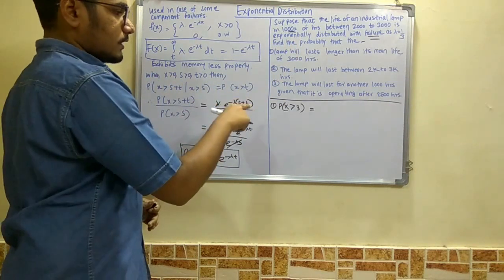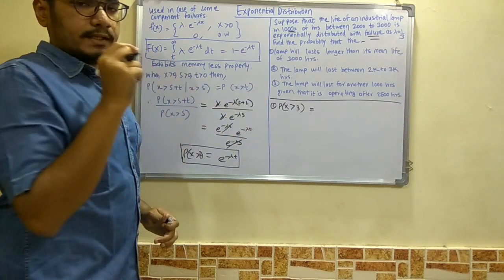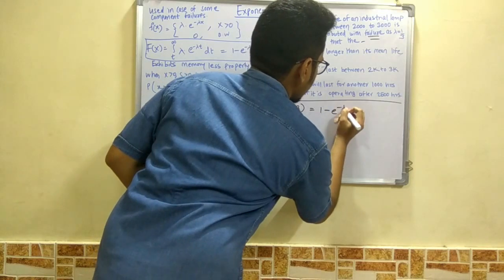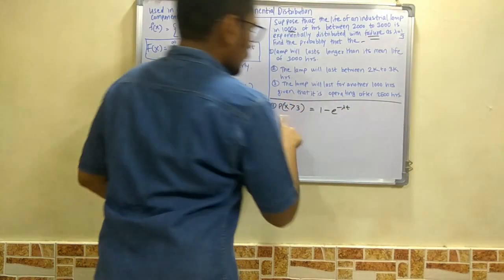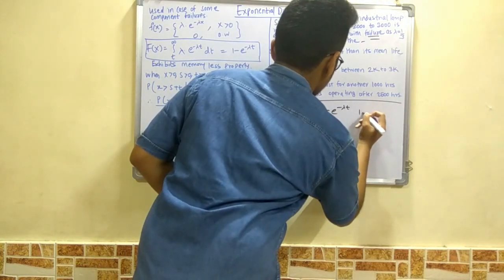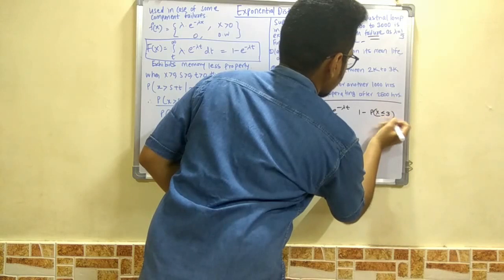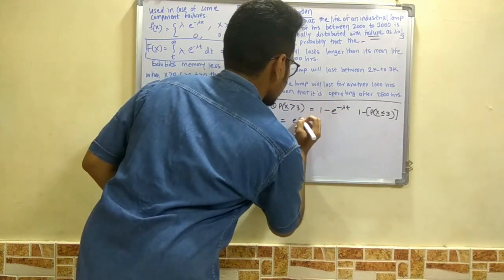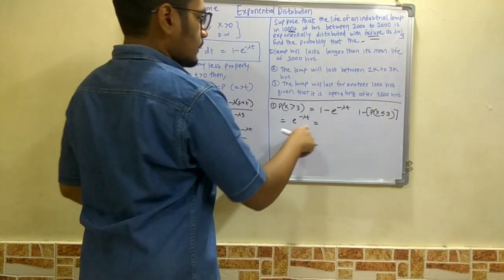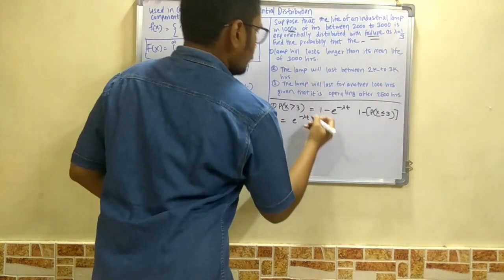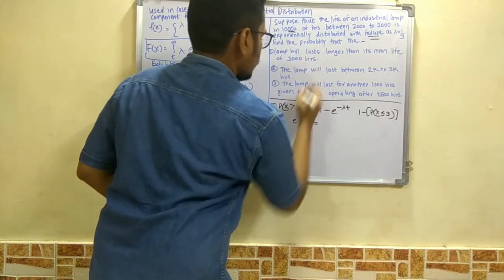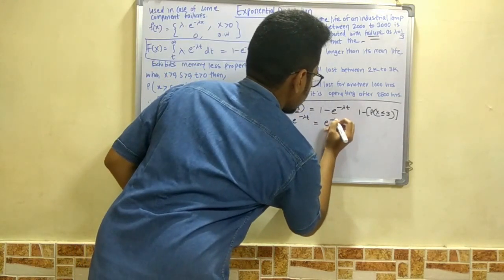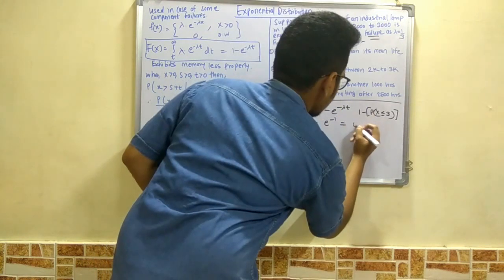For Case 1, since there are no additional parameters, we use 1 minus e^(−λt). We write 1 minus P(X ≤ 3), which simplifies to e^(−λt). Substituting λ = 1/3 and t = 3 gives e^(−1/3 × 3) = e^(−1), which evaluates to approximately 0.36.